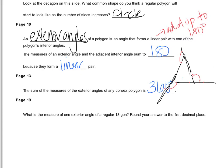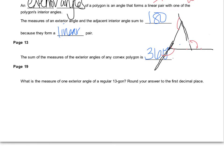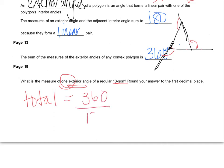This next question asks: what is the measure of one exterior angle of a regular 13-gon? Well, we know that the total exterior angle measure is 360. I just want one of them, and I know there are 13 total, so I can divide 360 by 13, and I get about 27.7 degrees. That's an approximation because it's rounded a little bit, but it's pretty close.